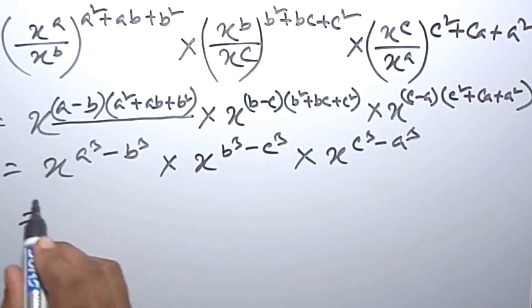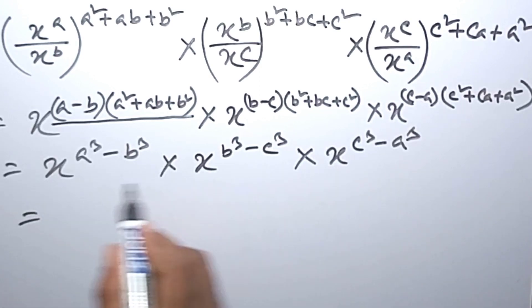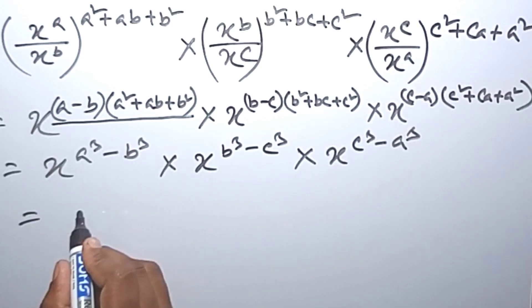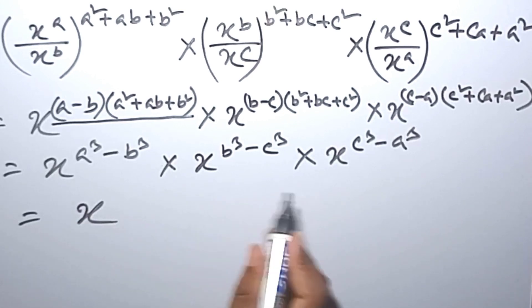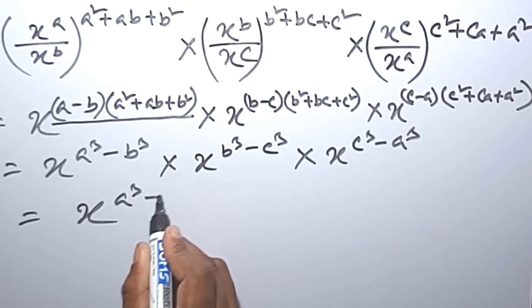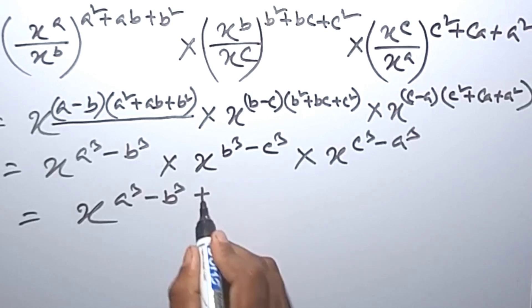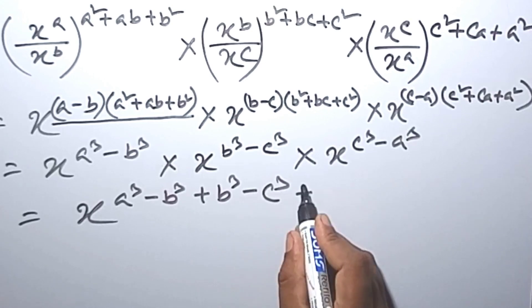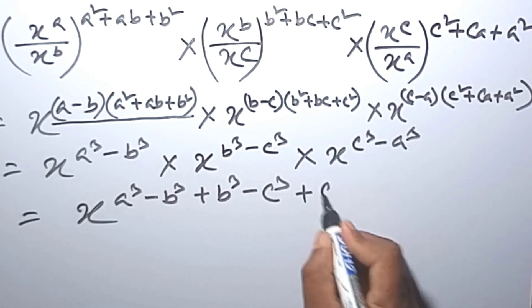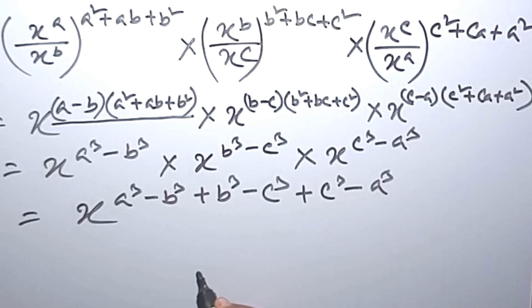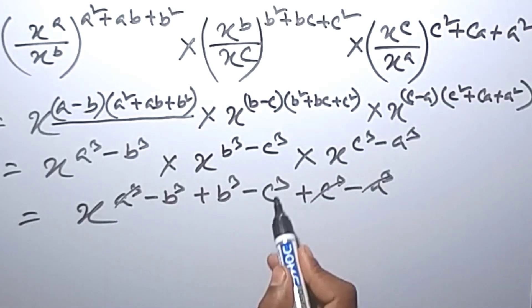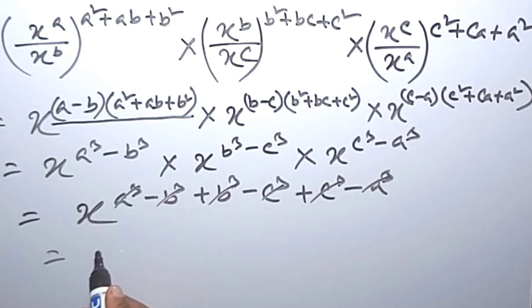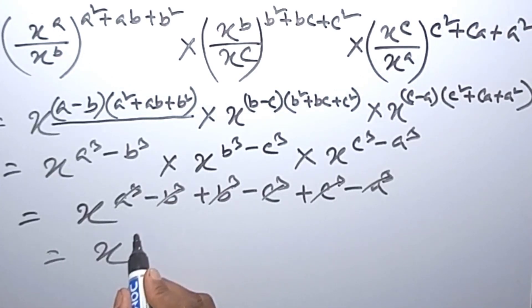So now multiplying all these x terms, we add the exponents: a cubed minus b cubed, plus b cubed minus c cubed, plus c cubed minus a cubed. These all cancel out, leaving x to the power zero.